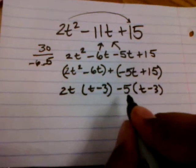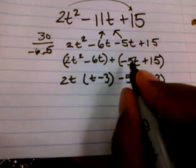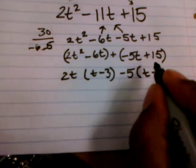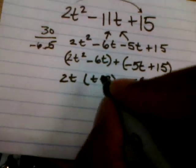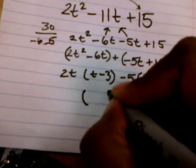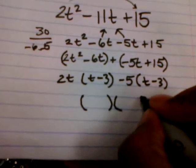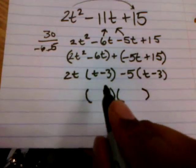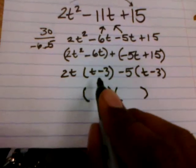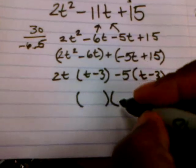Check it with the distributive property. Negative 5 times t is a negative 5t. Negative 5 times negative 3 is a positive 15. Cool. I'm going to create my double bubble beneath that. I know that these two terms both have t minus 3 in common. So I'm going to write that out.